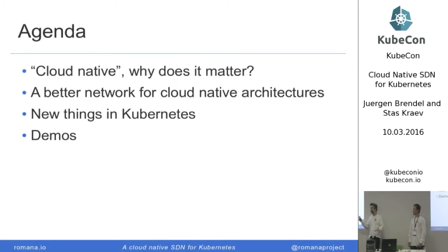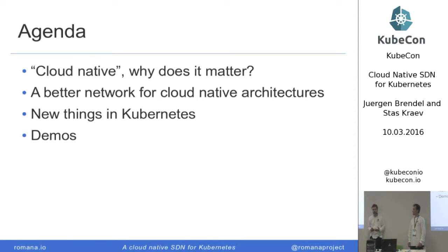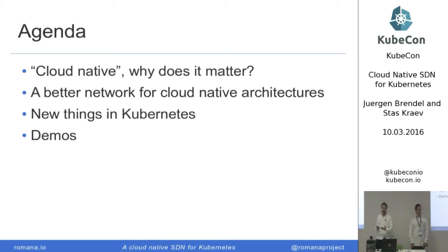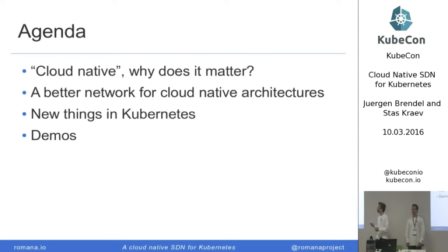This is what we're going to talk about. The keynotes already mentioned the term cloud-native, so we'll talk about what that means to us and why we think we need to rethink the networking we do in our clusters — to something better suited to the types of applications we're actually building these days. Along the way we'll talk about some of the new things in Kubernetes that we use to integrate our stuff. And we have some demos for you at the end.